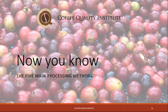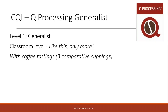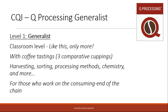Now you know the five main processing methods that we teach at CQI. This information is part of our CQI Q Processing Level 1 Generalist class. The course is classroom-based, and the information is like this, only there's a lot more. We have coffee tastings, and we also cover harvesting, sorting, much more in-depth coverage of the processing methods, chemistry, etc. It's designed for those of us who work on the consuming end of the chain.